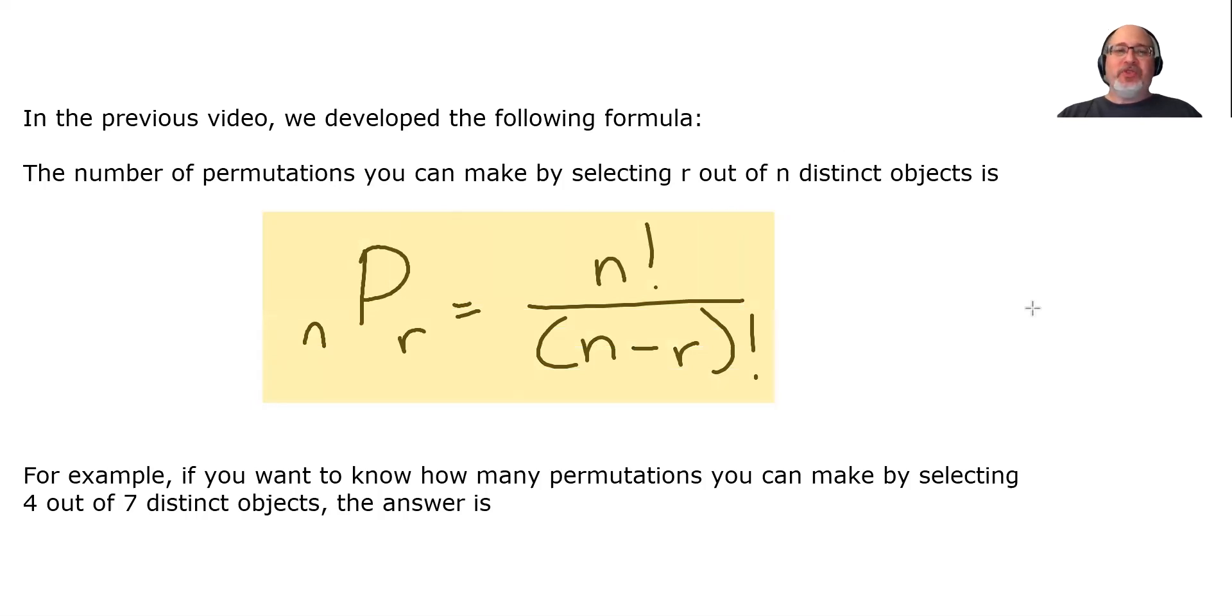It's a ratio of factorials. The most common mistake people make is forgetting the denominator is not the second number, but rather the difference of these two numbers. If you have the formula written down, you shouldn't make that mistake. For example, if you want to know how many permutations you can make by selecting 4 out of 7 distinct objects, the answer is 7P4 equals 7 factorial over (7-4) factorial. You could skip the middle fraction and just write 7 factorial over 3 factorial.